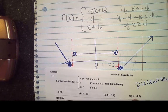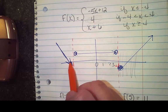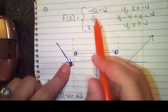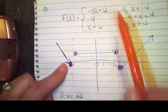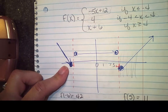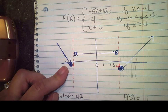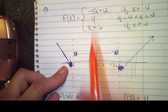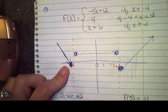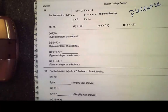Finally, f of negative 4.5. Where is negative 4.5? That's going to be over here with this line. It's helpful to draw a picture first. For f of negative 4.5: negative 4.5 times 5 is negative 22.5, plus 12 is going to be negative 10.5. You've got a couple of other ones like that on your assignment.